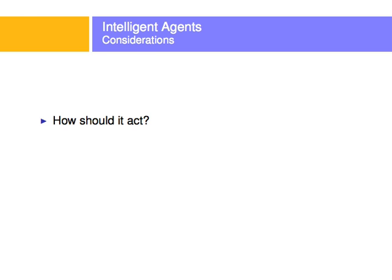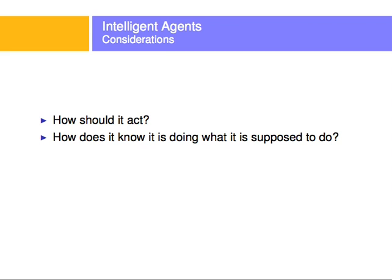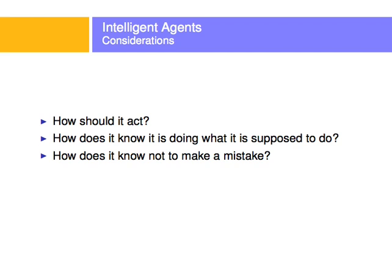Now some considerations for intelligent agents: designers need to think about how the agent is going to act — is it moving, talking, doing something else? How does it know it's doing what it's supposed to do? For example, how does the vacuum cleaner know it's actually cleaning the room and not just going around with no effect? How does it know not to clean a clean room, or in the case of a robot, how does it know not to trip on an electrical cord?